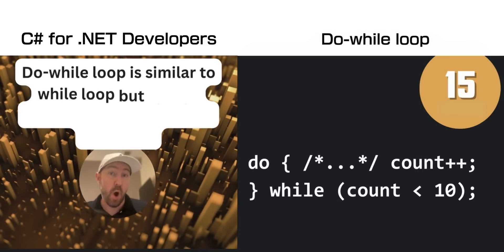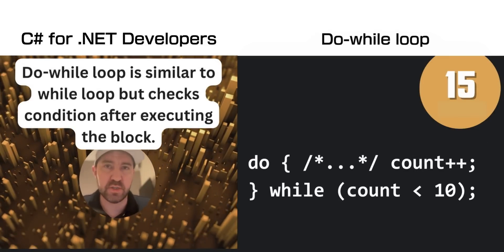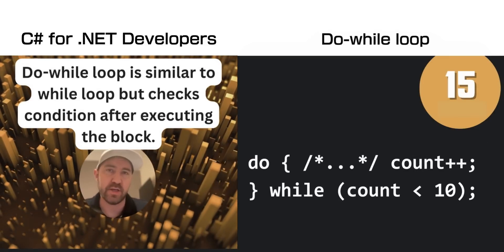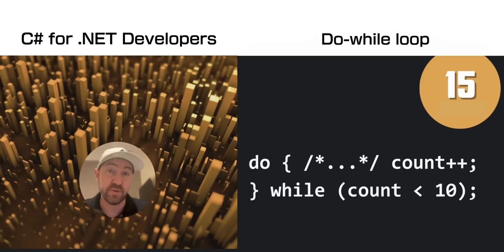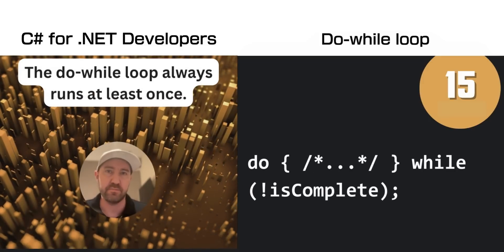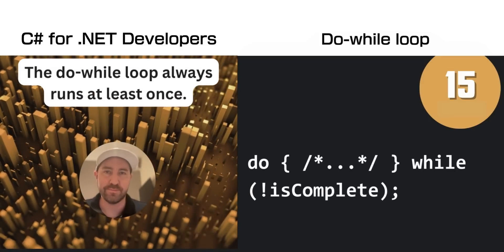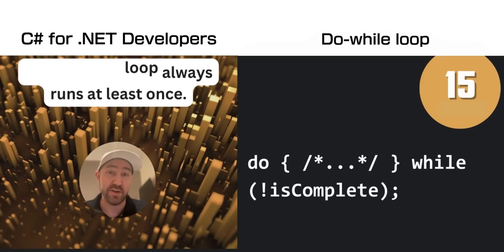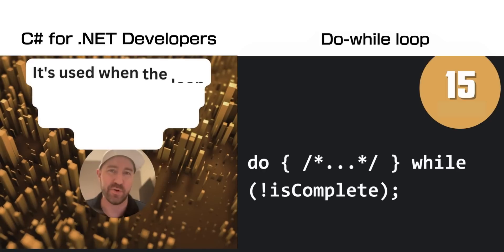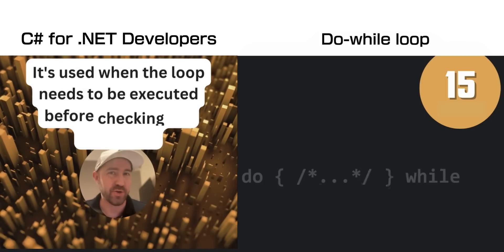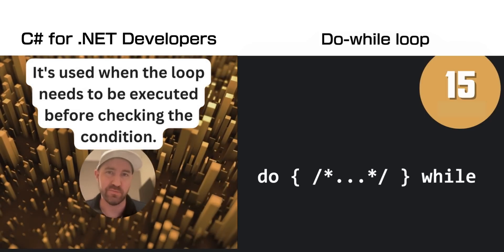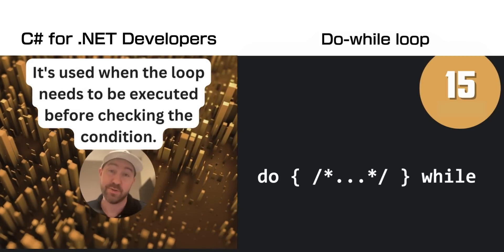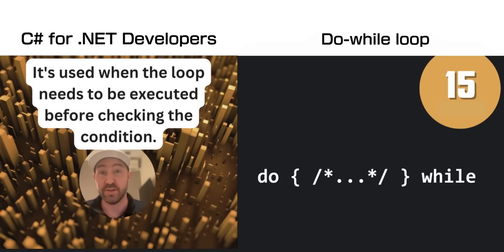A do-while loop is another kind of loop, but the condition check is after the iteration of the loop at the end. The difference here is that it will always run at least one time, whereas a while might not run at all. You would use it when you need to execute the loop before checking the condition.